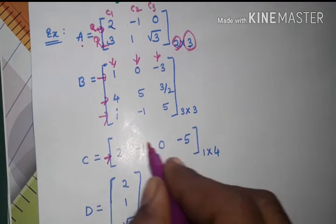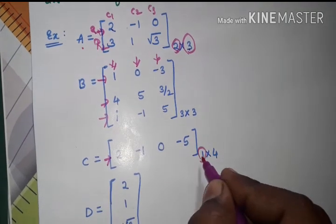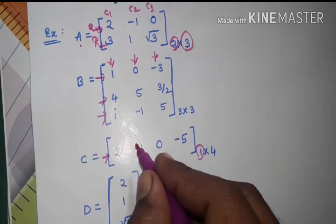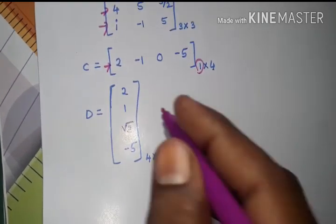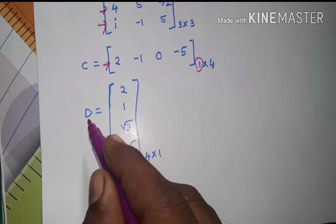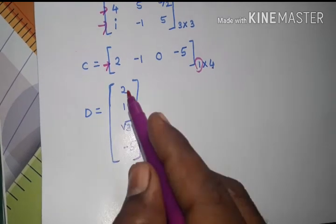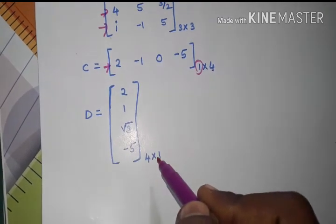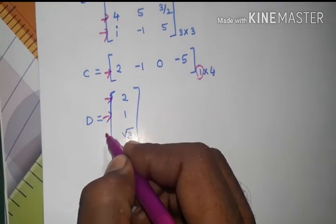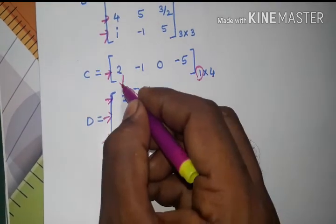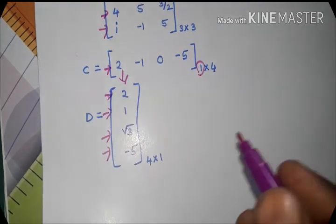Similarly, matrix C has an order: it has row number one and the number of columns are four, so the order is one by four. Also, D has an order four by one - it has four rows and one column. Thank you.